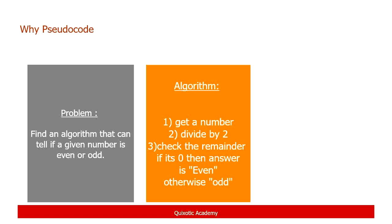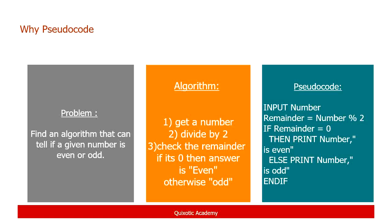Pseudocode helps us rewrite the algorithm in a more program-like way, making it easy to convert into a program. First we declare a variable named Number and input a value into it. Then we create another variable called Remainder and find Number MOD 2 — MOD is a mathematical function that finds the remainder instead of the quotient. Then we use IF: if Remainder is equal to zero then print the number is even, else print number is odd, then end IF.